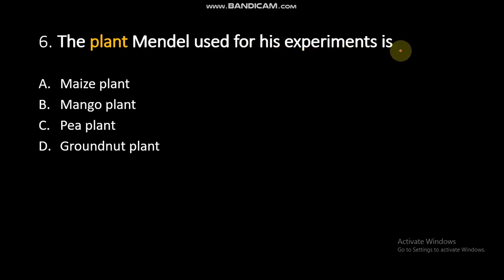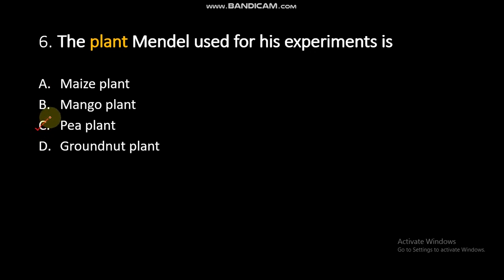The plant Mendel used for his experiments is? Mendel used pea plants for his experiments. So, option C is the right answer.